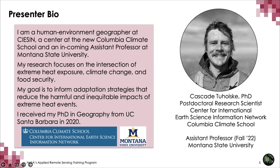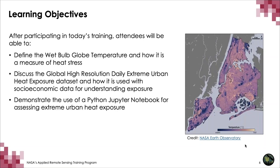I completed my PhD from UC Santa Barbara in 2020. Today, I will overview two datasets that I developed with SEDAC and NASA CDAC that are released for public use. The first learning objective is to define wet bulb globe temperature and how it is used to measure heat stress. Next, I will discuss the global high-resolution daily extreme urban heat exposure dataset and how we can use it with socioeconomic and demographic data to understand how extreme heat exposure in cities worldwide has changed. Finally, I will demonstrate use of these datasets in a Python Jupyter Notebook, as well as some exploratory analysis in QGIS.